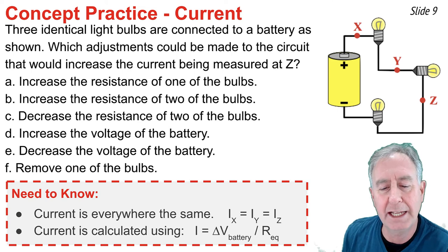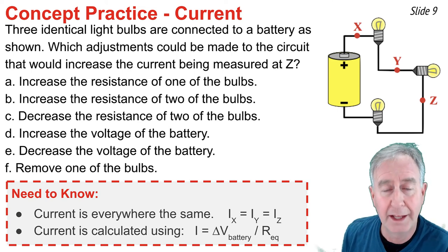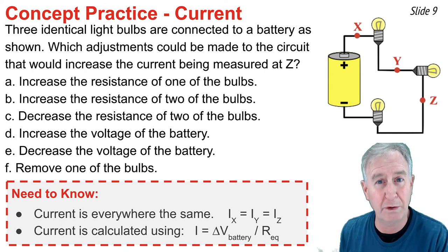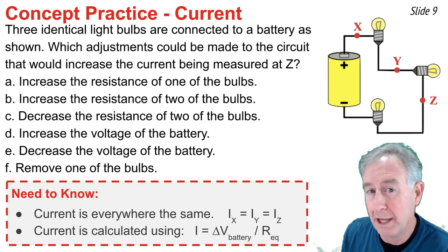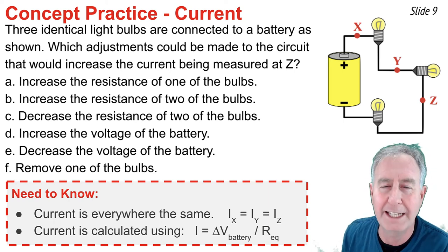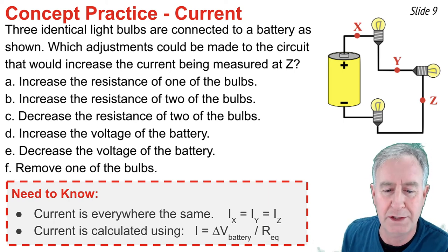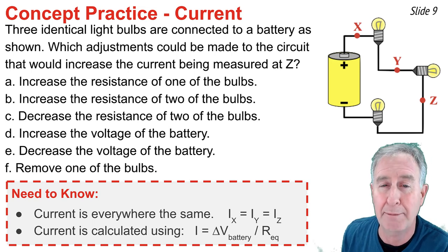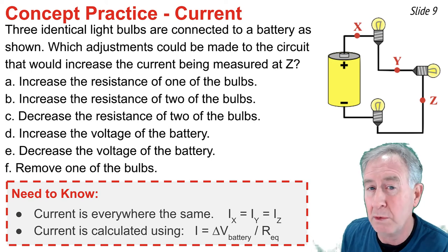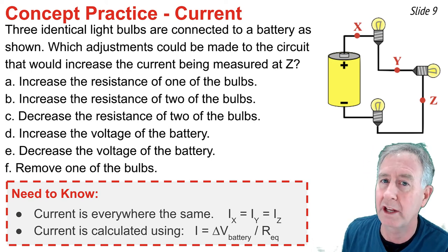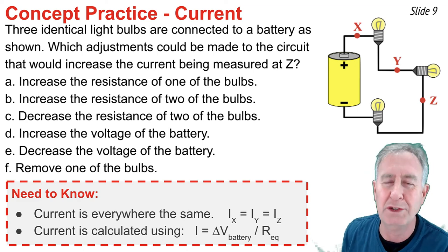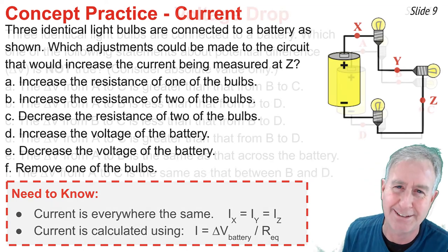Choice D — increasing the voltage of the battery — increases the numerator in I equals delta V over R equivalent, so that increases current; pick D. Choice E is the opposite of D, so skip it. Choice F — removing one bulb to make a two-bulb circuit — gives less resistance and more current, so that's a good choice as well. The final answers are C, D, and F.